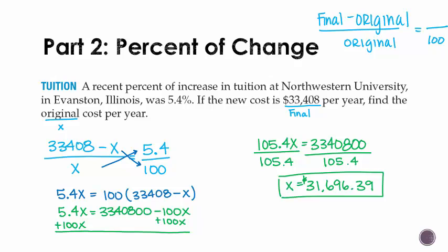Before we move on, let's make sure our answer makes sense. There was a percent increase. It went up. So it makes sense that our original cost is less than our final cost. So always double check that before you move on to another problem.